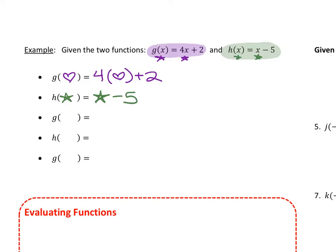If we want g of smiley face, since that's what's inside the parentheses, that's what I put inside the function instead of x — giving us 4 smiley face plus 2. Whatever is inside those parentheses is what gets replaced for every x inside the function. For h of capital Q, h becomes Q minus 5. No matter what is in the parentheses, that's what you replace in the function itself.